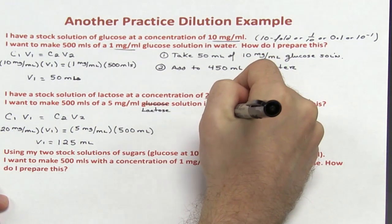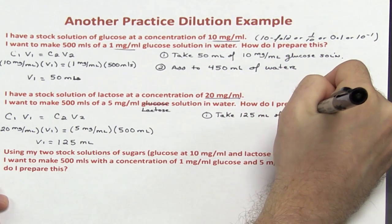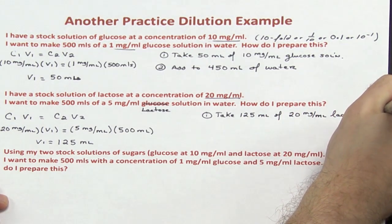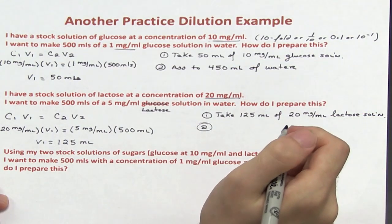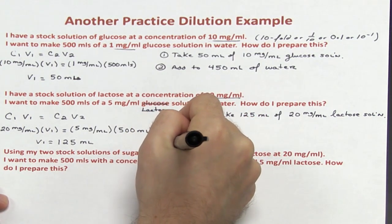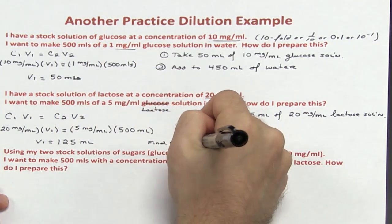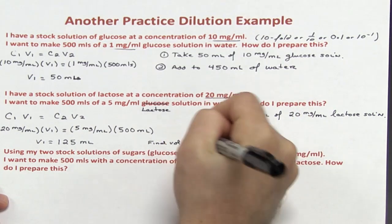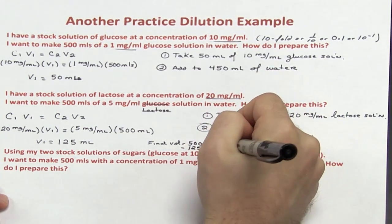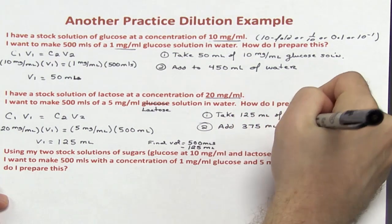Step 1: take 125 mL of the 20 mg per mL lactose solution. To figure out how much diluent to use: the final volume is the amount of stock plus diluent. I want a final volume of 500 mL, so I subtract the stock of 125 mL, leaving 375 mL. I will add that to 375 mL of water.